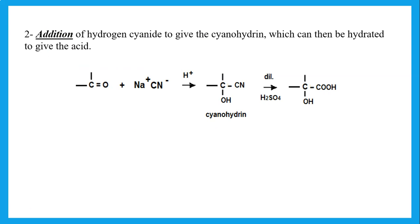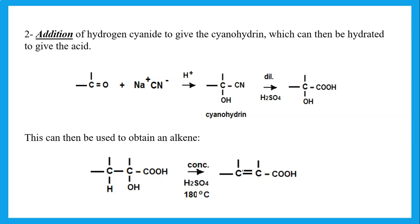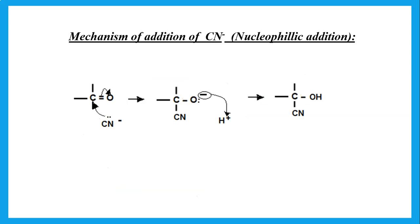We can also add hydrogen cyanide. When we add cyanide in the presence of acid, this forms what we call a cyanohydrin. Then hydrolysis with dilute acid changes the CN into an acid group. This acid with an OH on it, if heated with concentrated sulfuric acid, will remove water and can be used to form an alkene from the compound.